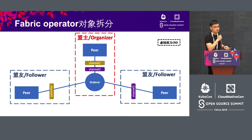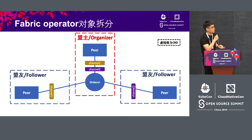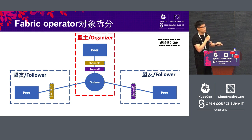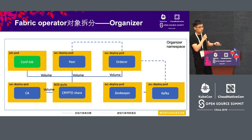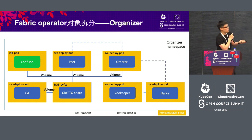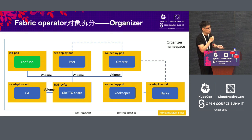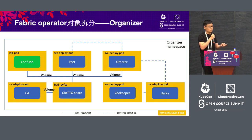We defined two CRDs. For the organization establishing the consortium we call it organizer, and then followers and channel. Channel is a kind of virtual resource. The difference is that for a fabric channel there is only one, but this channel belongs to some organizations. So for the CRD there are two channel objects belonging to different organizations. For organizer, it has the namespace, and we will deploy the peer and orderer — all modules are started via Docker. The dotted lines represent network communication and the solid lines represent volume relations.